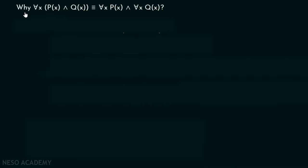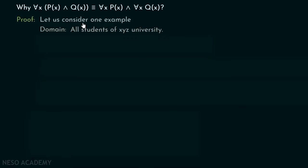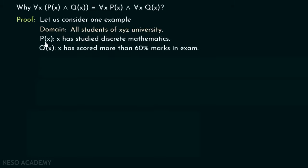Why is for all x P(x) ∧ Q(x) equivalent to for all x P(x) and for all x Q(x)? Let us prove this with an example. Consider the domain of all students of XYZ university. The predicate P(x) denotes 'x has studied discrete mathematics' and Q(x) denotes 'x has scored more than 60 percent marks in exam.'